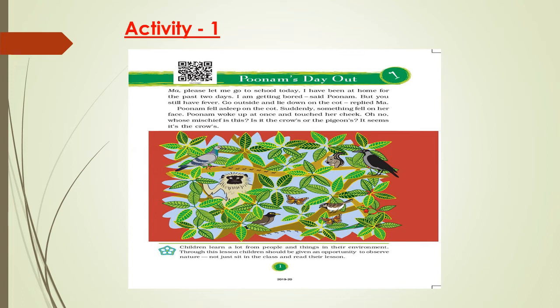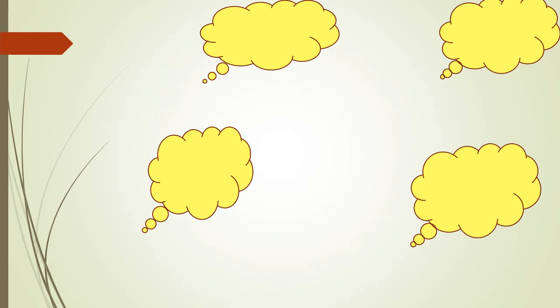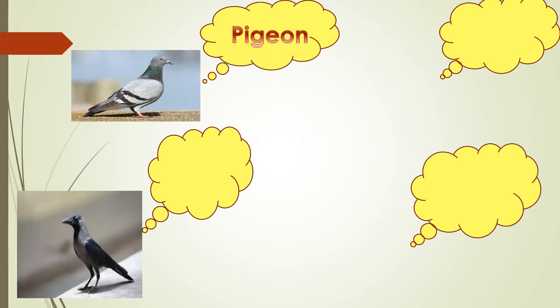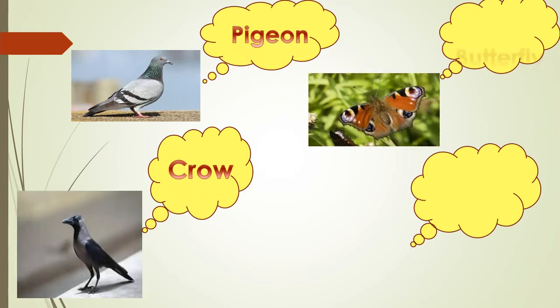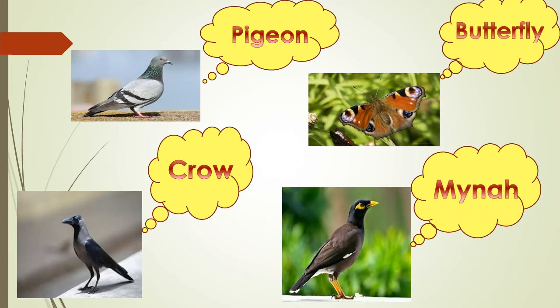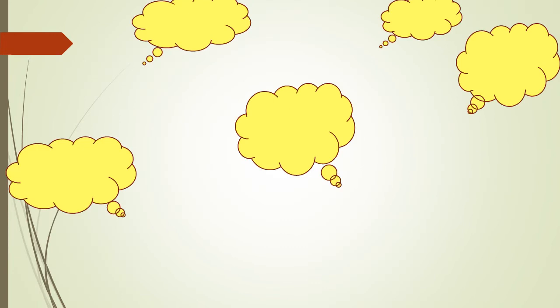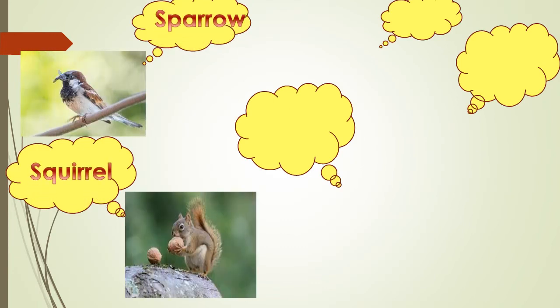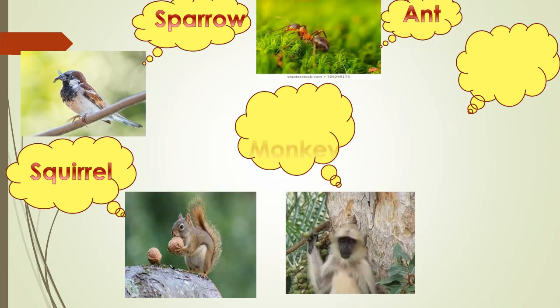Poonam looked up. She saw many animals on the tree. So students, which animals can you spot on the tree in the picture? Right. Those animals are pigeon, crow, butterfly, myna, sparrow, squirrel, ant, monkey and parrot.